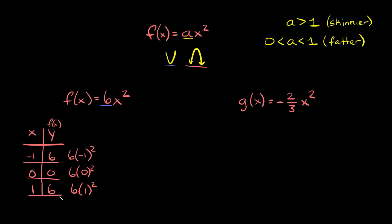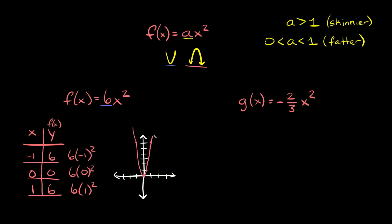So we have our three points and we can plot those. Our first coordinate is negative 1, 6. Then at 0, 0 at the origin, and then 1, 6. So there are our three points. Now you just connect the dots and there's your parabola. It's what we expected — it's pointing up and it's pretty skinny.